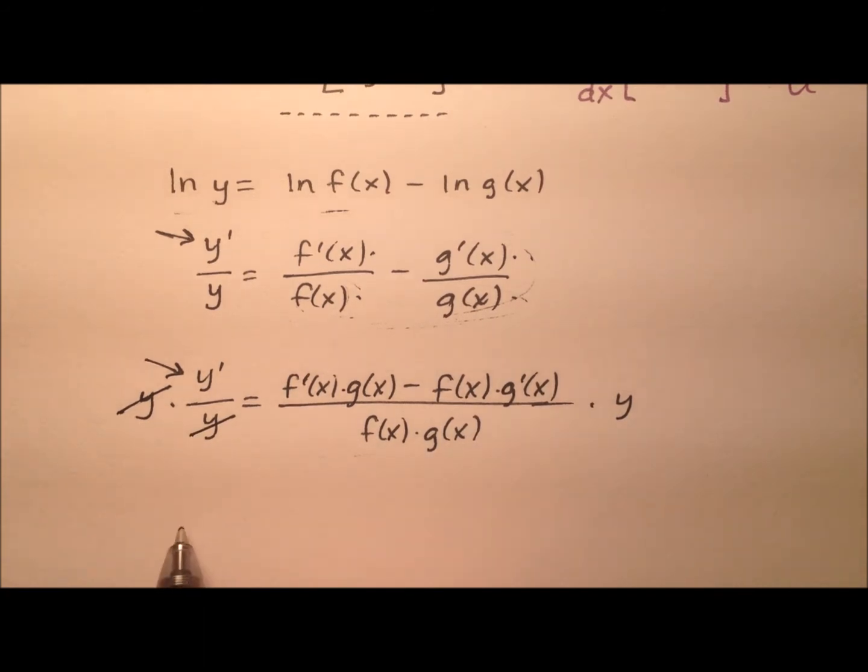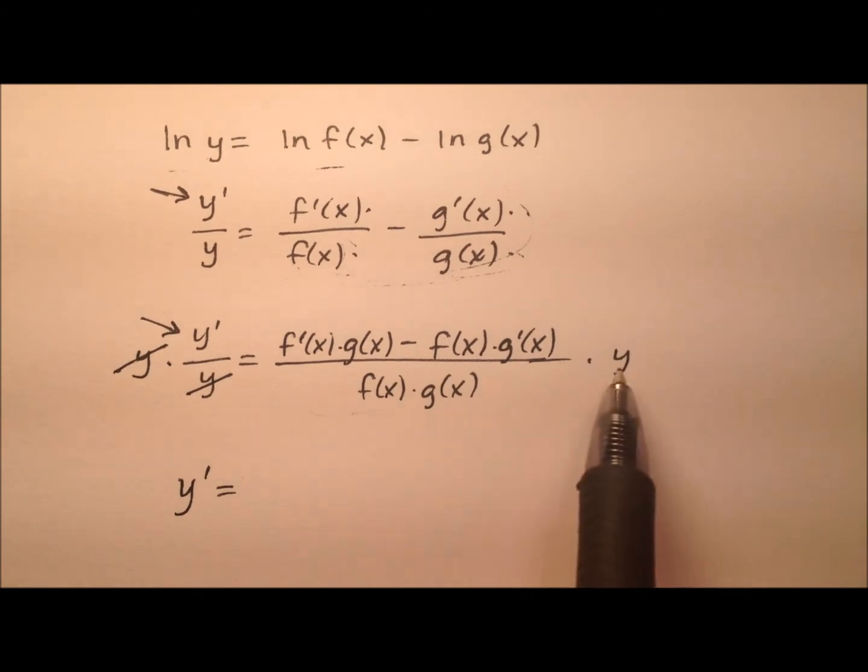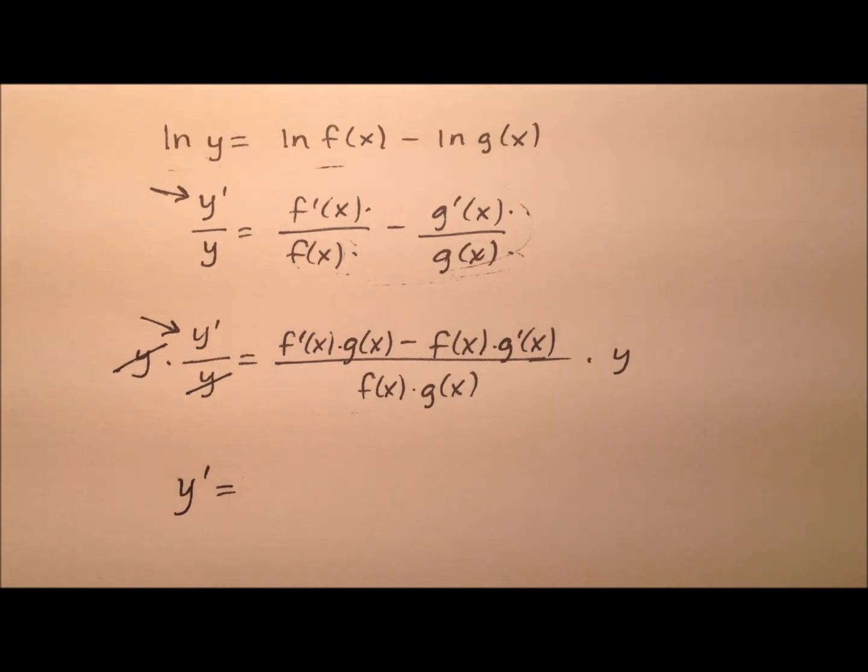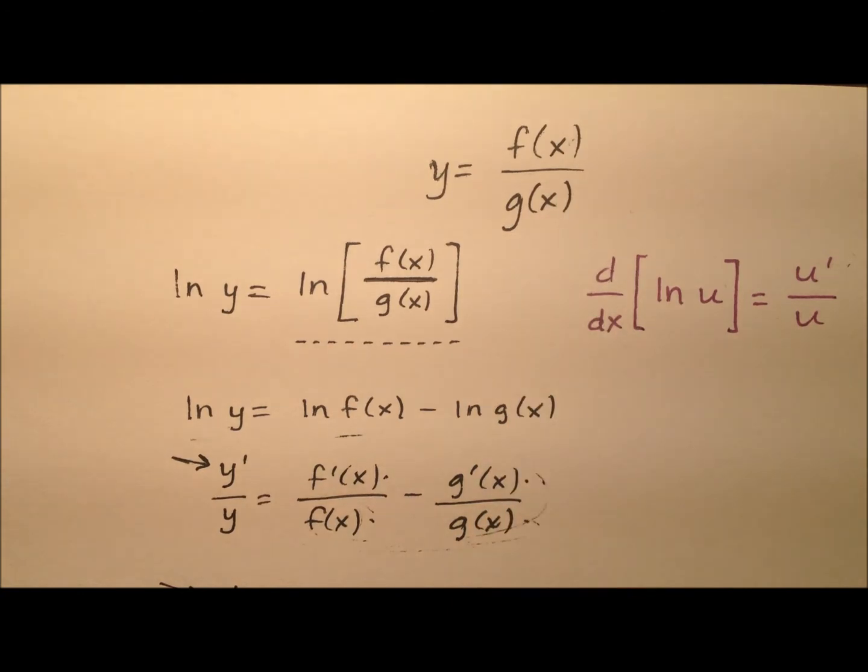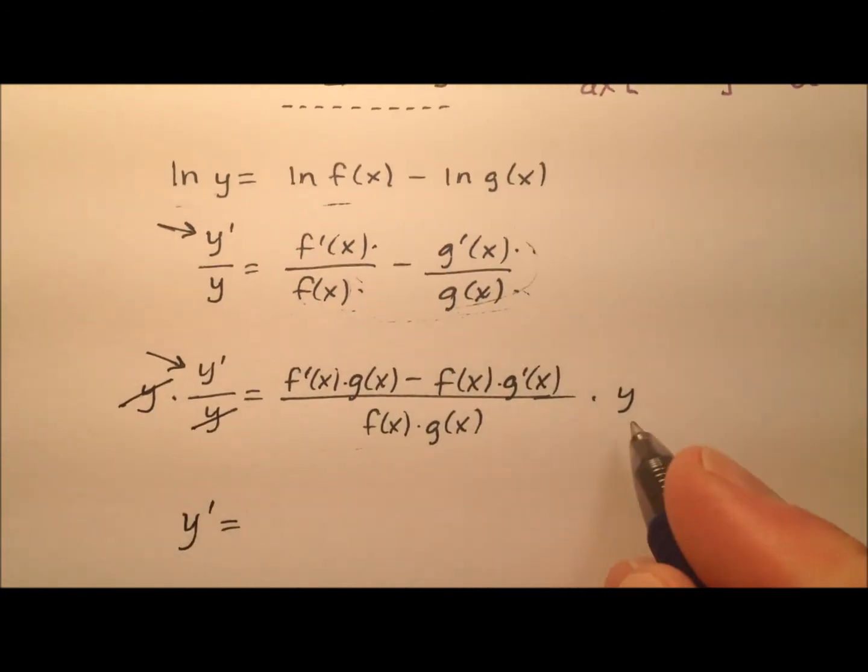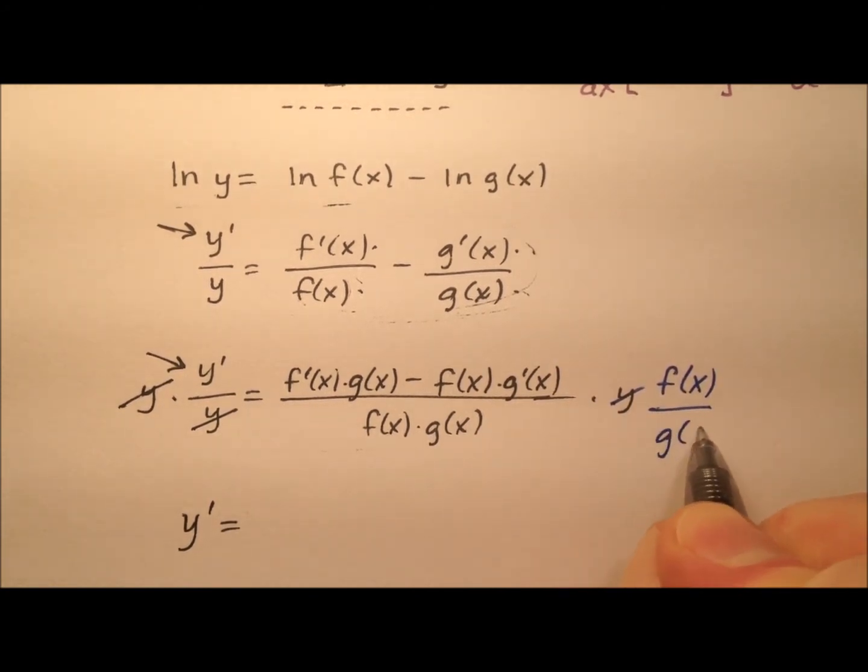the y's will cancel. And y prime is all by itself. But now I need to contend with this right side. So remember what this y was back from our original equation. This y was f of x divided by g of x. So let's go ahead and replace this y with f of x divided by g of x.